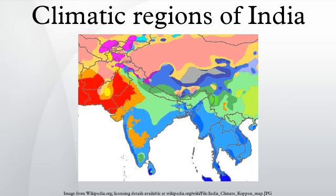Dry climate group: this group consists of regions where the rate of evaporation of water is higher than the rate of moisture received through precipitation. Tropical semi-arid climate: a long stretch of land situated to the south of the Tropic of Cancer and east of the Western Ghats and the Cardamom Hills experiences this climate.